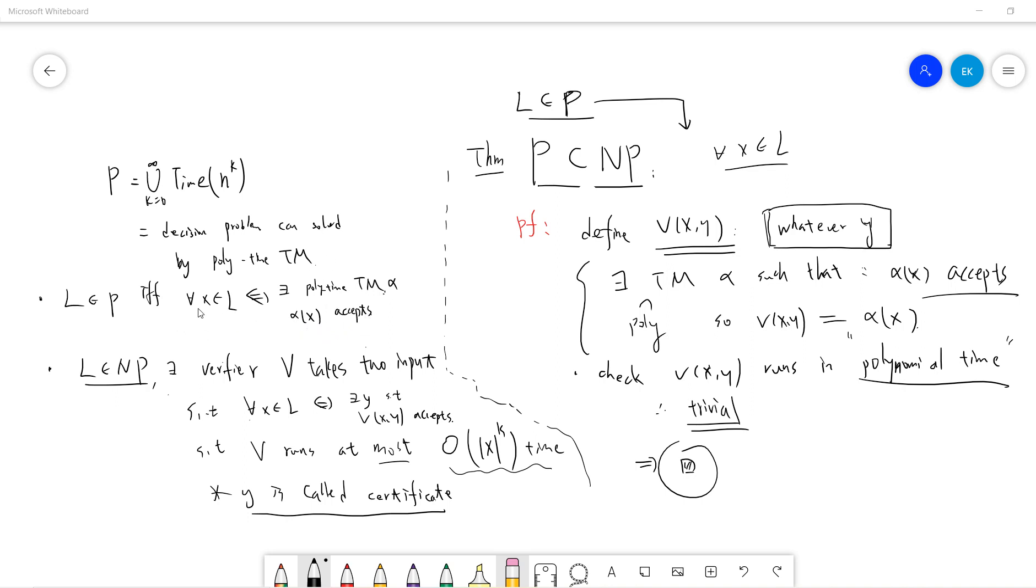So, basically, and if x do not belong to l, then alpha of x will reject. So, basically, you can solve it. You can decide which this input is correct or not in a polynomial time.